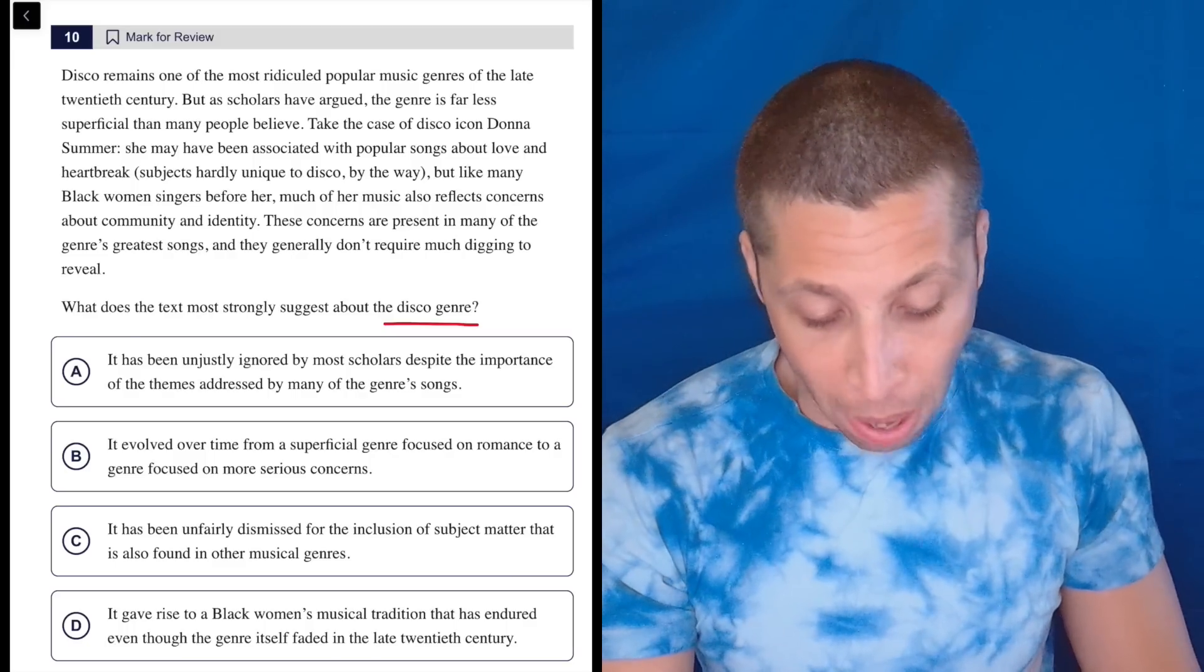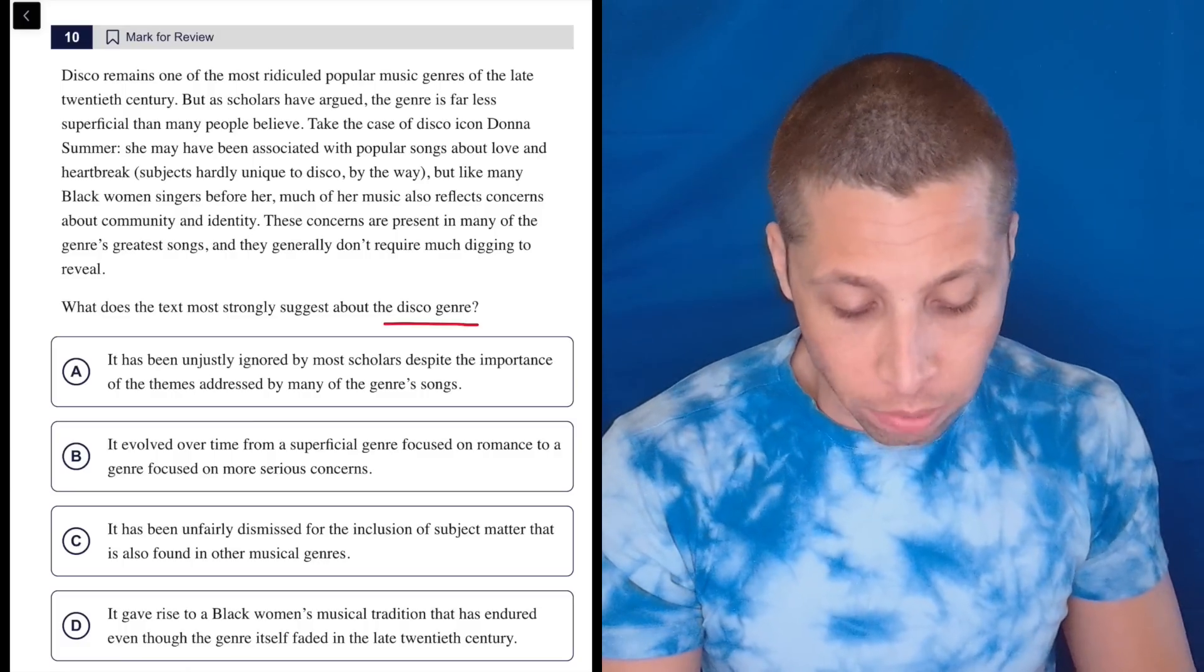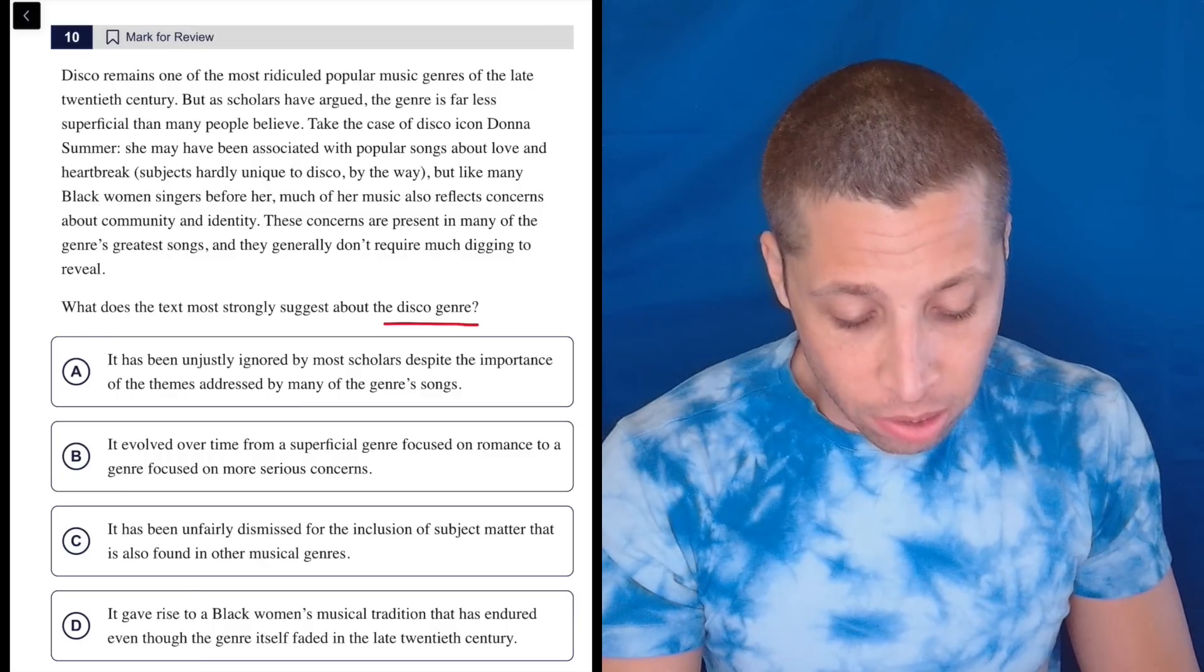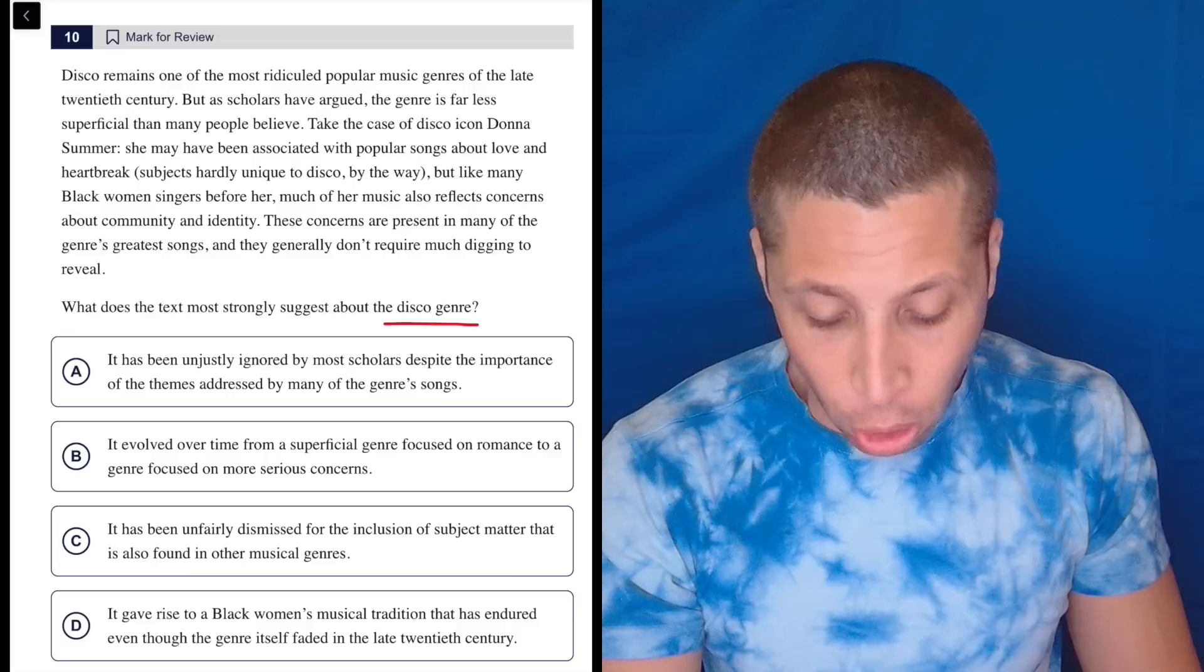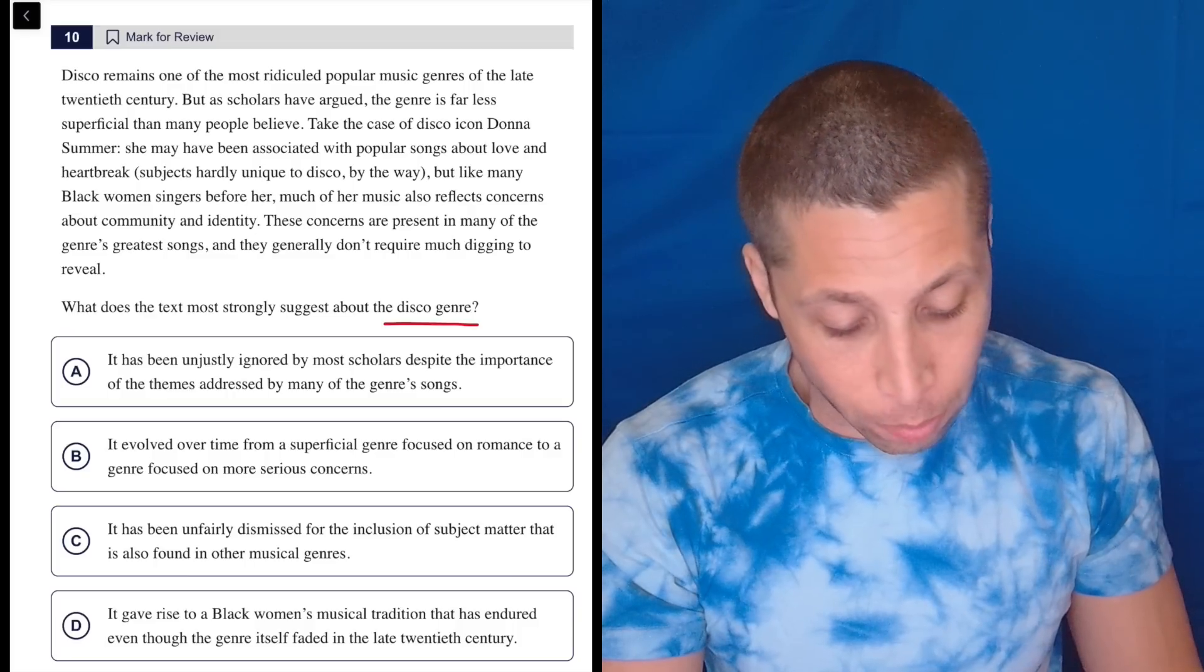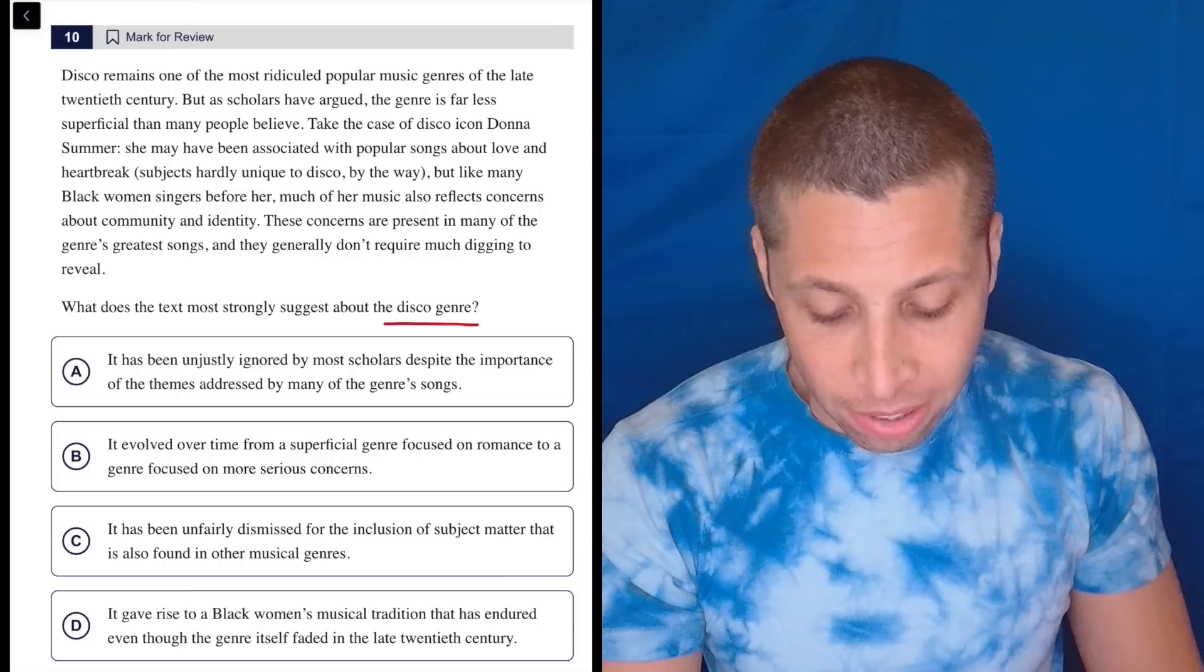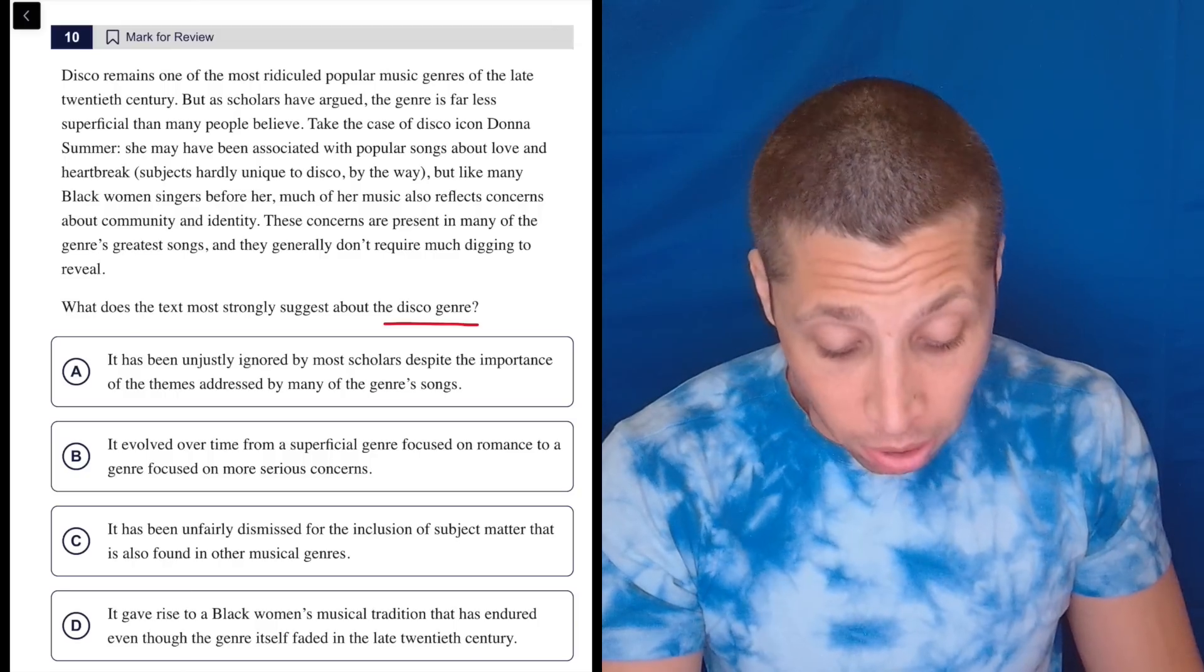Disco remains one of the most ridiculed popular music genres of the late 20th century. But as scholars have argued, the genre is far less superficial than many people believe. Take the case of disco icon Donna Summer. She may have been associated with popular songs about love and heartbreaks, subjects hardly unique to disco, by the way.